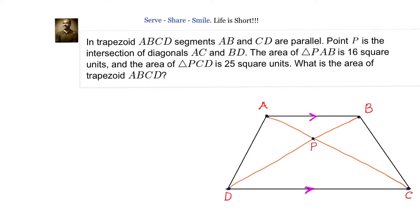In trapezoid ABCD, segments AB and CD are parallel. Point P is the intersection of diagonals AC and BD. The area of triangle PAB is 16 square units and the area of triangle PCD is 25 square units. We need to find out what is the area of trapezium ABCD.